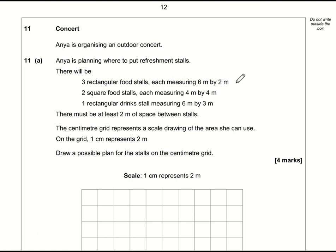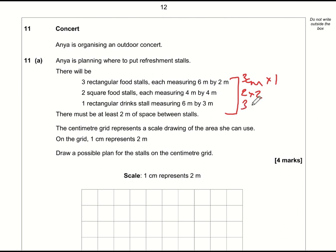Question eleven: draw items on a grid where 1 cm represents 2 metres. Divide all real-world dimensions by 2 to get centimetres. The square food stalls are 2 cm by 2 cm, and the rectangular food stalls are 3 cm by 1 cm. The drink stall is 3 cm by 1.5 cm. There must be at least 2 metres — 1 cm on the grid — between stalls.